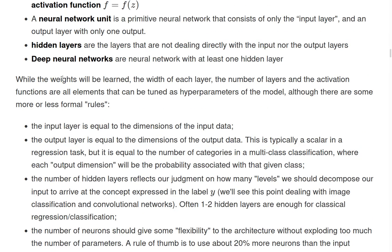So one important thing: while the weights will be learned by the algorithms, all the other parameters, the width of each layer, the number of layers, the kind of activation functions, all these are elements that will be tuned as hyperparameters of the model, for example, doing cross validations. But there are some kind of informal indications of which kind of parameters to use.